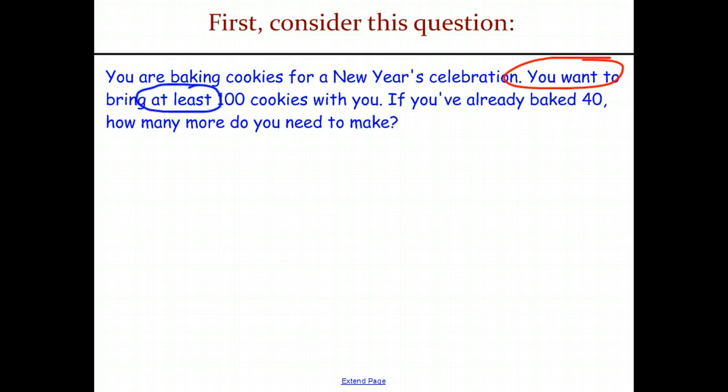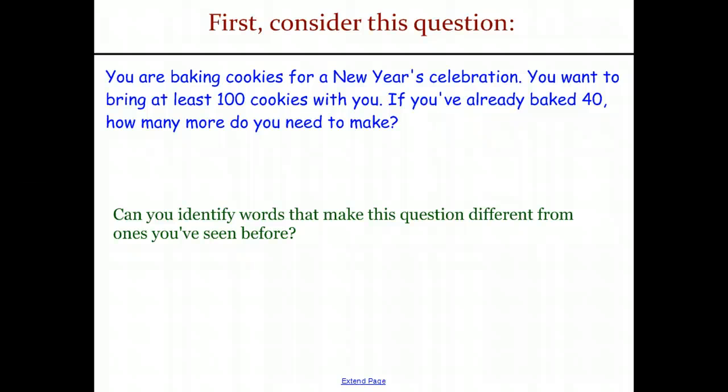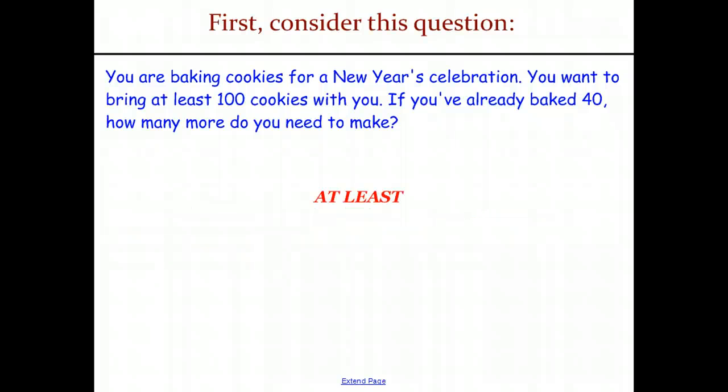And so the question is, if you've already baked 40, how many more do you need to make? And so as we've been talking about as we've read this question, one of the primary things is identifying what makes this question different from the ones that you've seen before, and it's at least. It's not you want to bring 100 cookies, you want to bring at least 100 cookies. And so that changes the total possible answer set from one specific number, which is 100, to an entire group of numbers, and that's any number over 100.